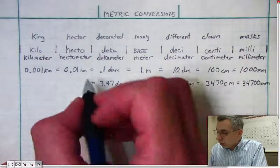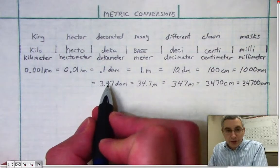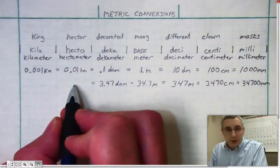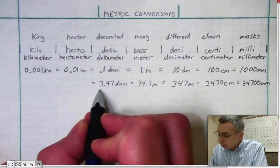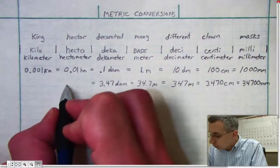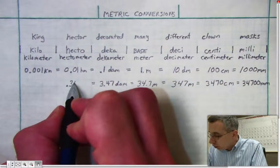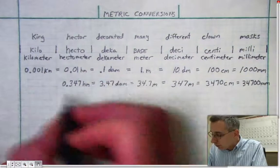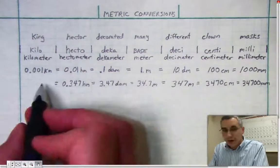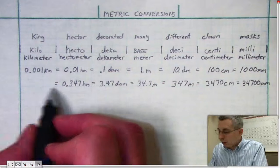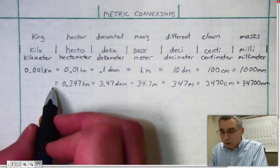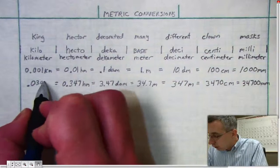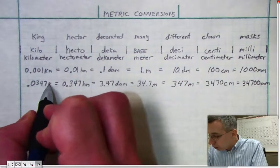Now I should keep going the other direction as well. Start with my original 3.47. If I want to move that and make it become hectometers, I move my decimal place to the left, so it becomes 0.347 hectometers. And to finish this, to turn it into kilometers, I move this decimal one more time over, so it becomes 0.0347 kilometers.